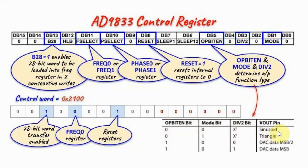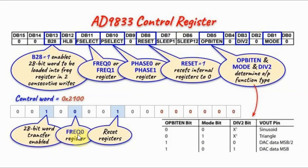We either have a sinusoid, a triangle, a square wave at half frequency, or a square wave. As an example, if a particular control word is written into the control register, we are enabling the 28-bit word transfer, selecting frequency register 0, and resetting the internal registers.